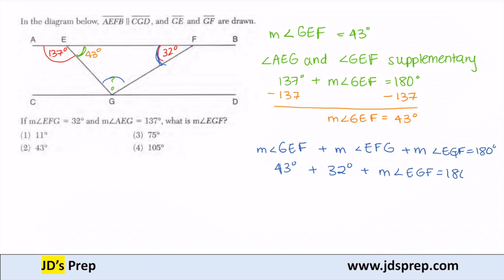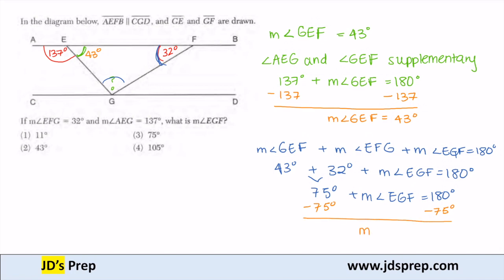When I add those together, I get 75 degrees, plus the measure of EGF equals 180 degrees. Subtracting 75 degrees from both sides, I get the measure of EGF to be 105 degrees. So the answer to this question would be number 4: the measure of EGF is 105 degrees.